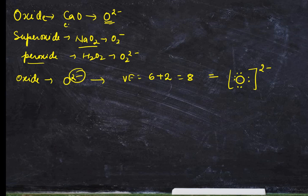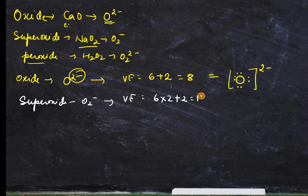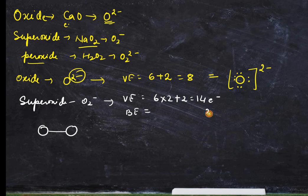Superoxide formula is O₂⁻¹ — it means there are two oxygens with a minus 1 charge. How many valence electrons total do we have? We have 6 electrons times 2, plus 1 for the charge, which gives us 13 electrons total. Let's start making the bond: oxygen 1 is here, oxygen 2 is here. After making the bond we have 2 bonding electrons, so we have 11 lone pair electrons remaining.